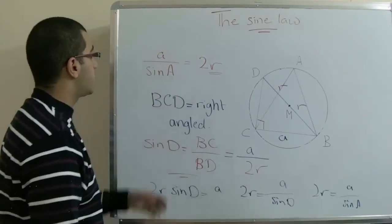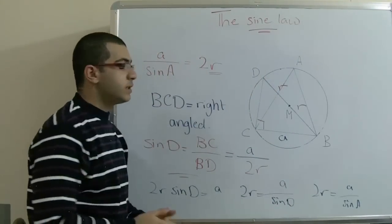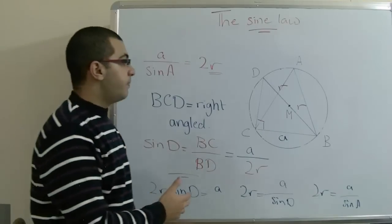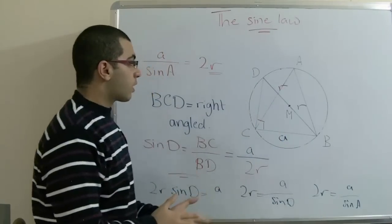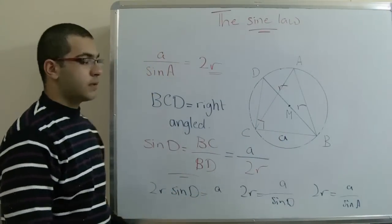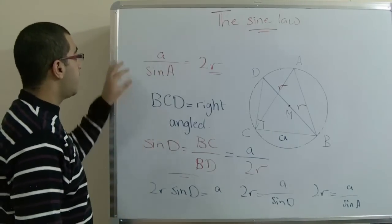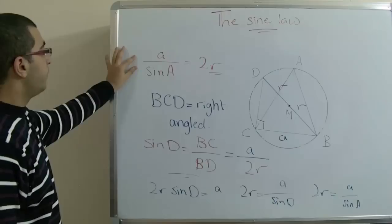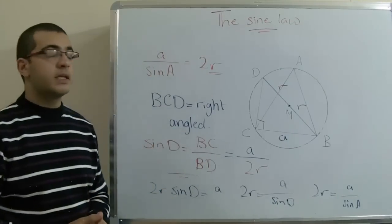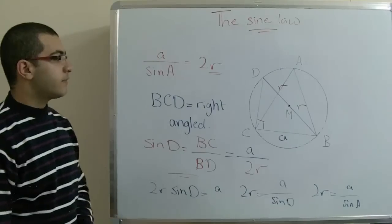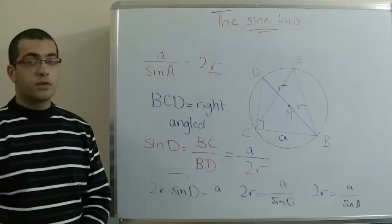And now we have proved that the sine law equals 2R. We can use this rule to get the area of the circumcircle or the circumference of the circumcircle by using the sine law. So if we have the value of the sine law expression, it equals 2R, and we can simply get the value of the radius, then find the area or circumference of the circumcircle.